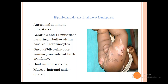Epidermolysis Bullosa Simplex is an autosomal dominant inherited disorder. The important gene mutations are Keratin 5 and Keratin 14, resulting in bullae within the basal keratinocytes. It occurs on trauma-prone sites. It heals without scarring and there is no involvement of the mucosa — oral cavity, eye, genital mucosa, hair — these are all spared. It is a milder form.